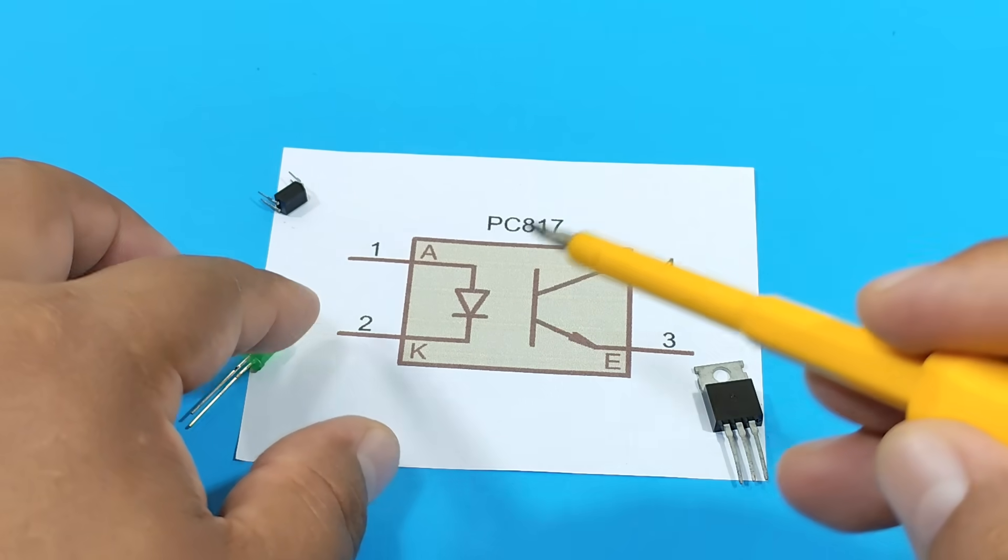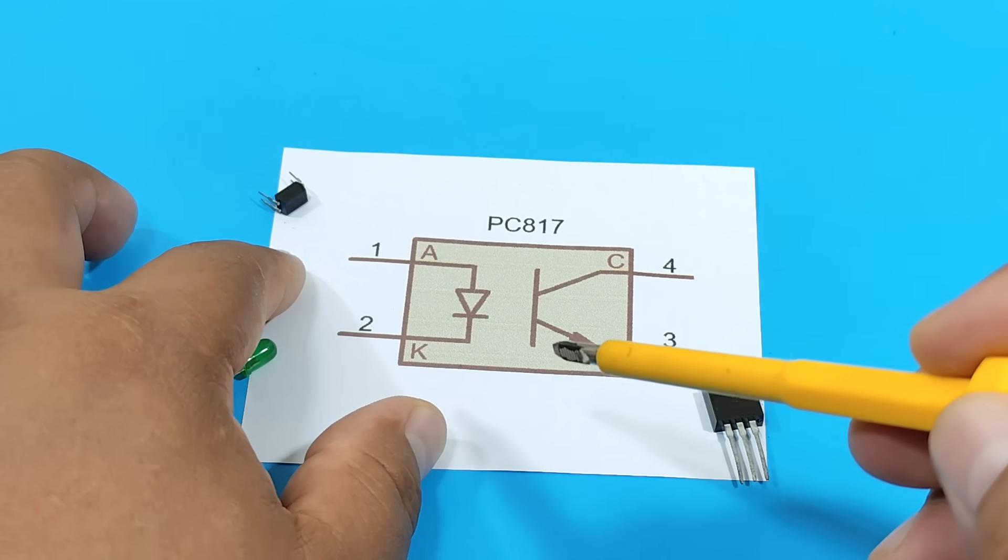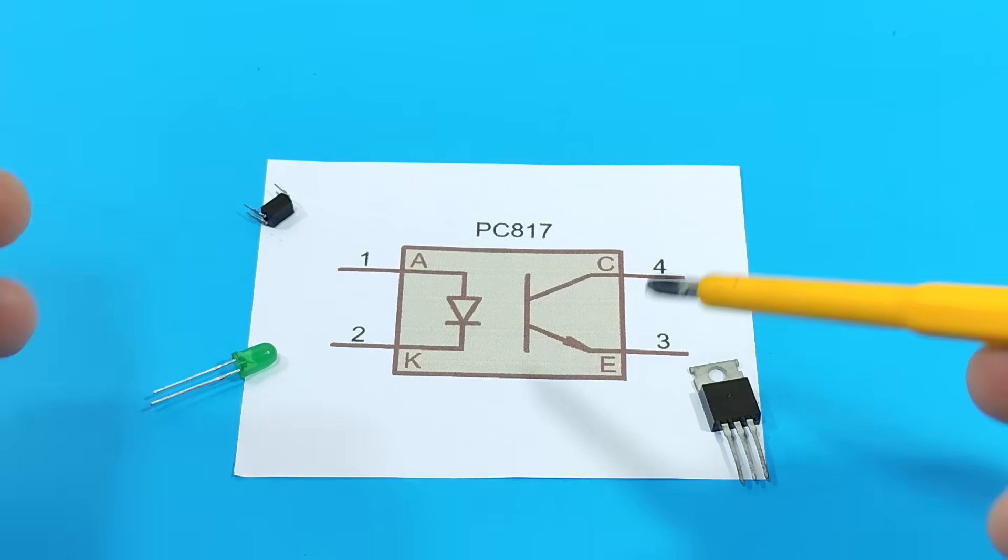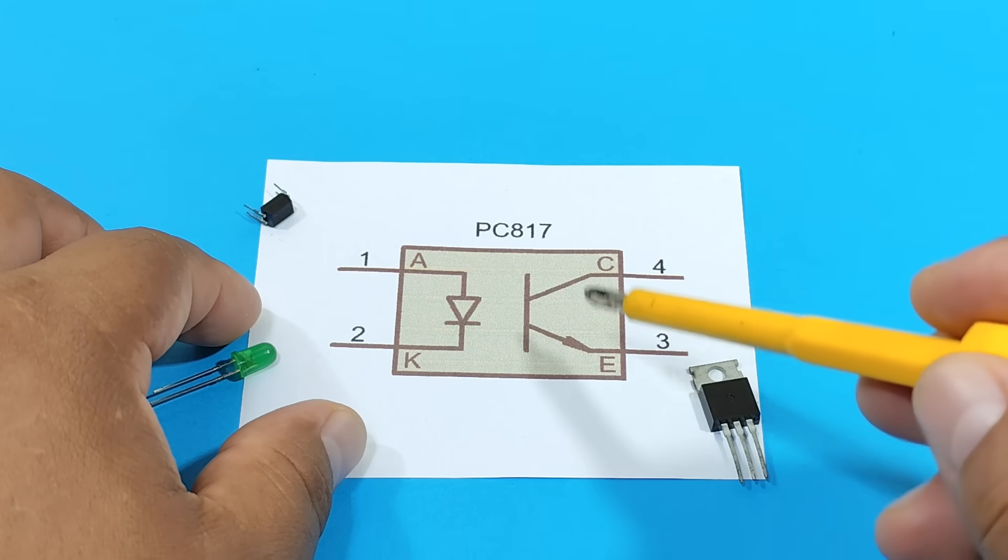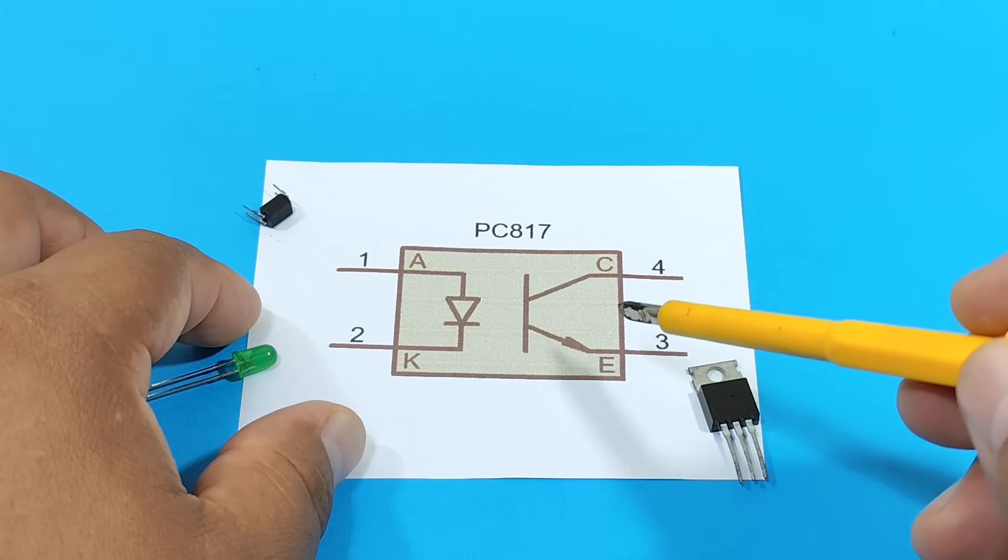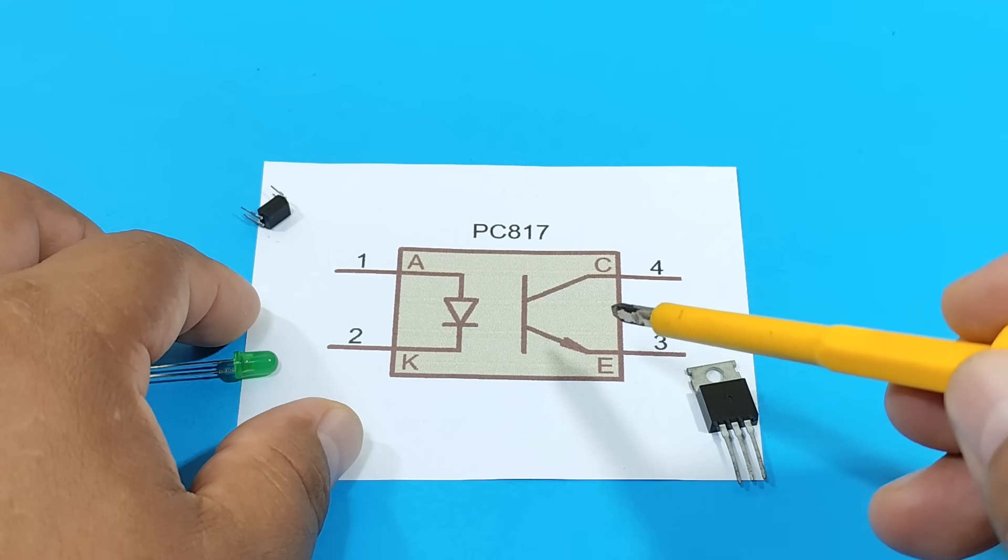But keep in mind that there are more than just opto-transistors. There are also other types of optocouplers. That is, on this side we can have other components. For example, a logic gate or a triac.